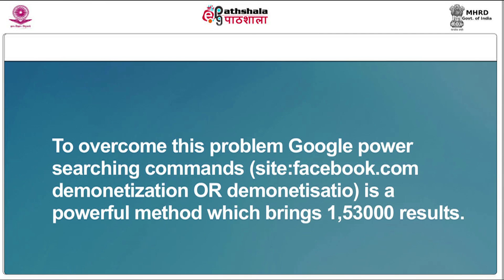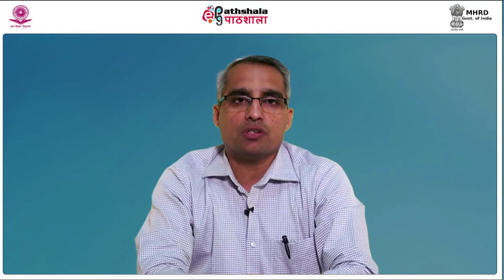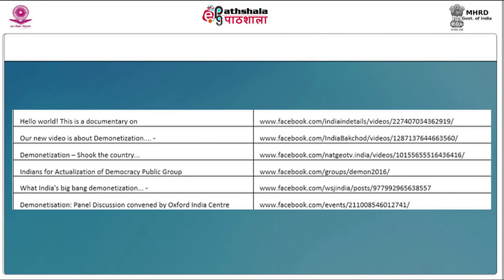To overcome this problem, Google power searching commands can be employed. For example, entering the command 'site:facebook.com demonetization' in Google is a powerful method which brings over 1.53 lakh results. You can go to individual Facebook posts and collect content manually or by using the Google Chrome extension Link Clump, which was discussed in the last presentation. It harvests data as per the headlines of Facebook posts and corresponding URLs as shown in the table, giving you some control over the data.